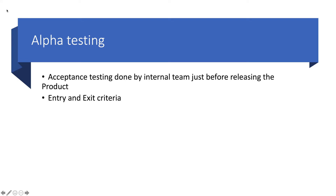The entry and exit criteria for alpha testing: the entry criteria is when the developer, QA, and the team all agree that the product is developed and ready for release. Once it is ready for release, everybody does acceptance testing — that is where alpha testing starts. The exit criteria is once everybody completes alpha testing and all the bugs they could find are solved.